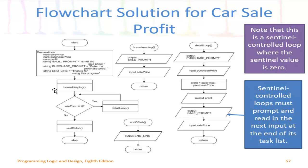Then we go into the housekeeping module, which does some business-type items getting ready for the main part of the program. The main part is a loop that continues as long as the sale price is not equal to zero. We have a decision symbol: if the sale price is not equal to zero, we make a call to the detail loop. This loops back around until sale price is zero. Once it is zero, the end of job module is called and then the program stops. Each of these internal module calls is defined on the right-hand side of the slide.